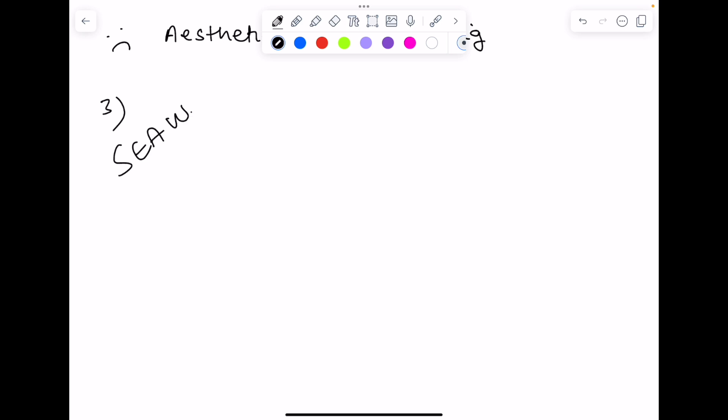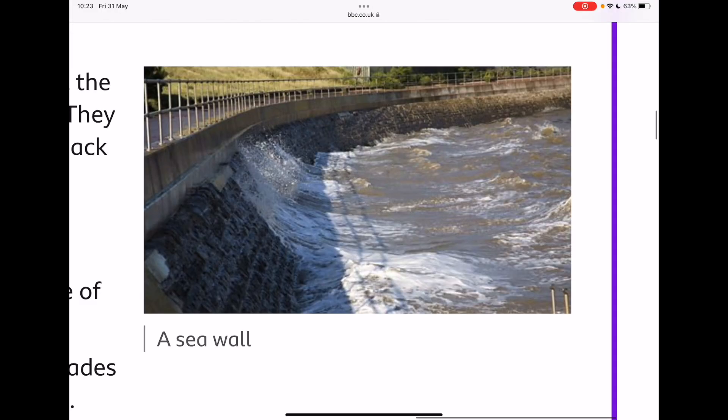Sea walls. So here's a sea wall. These are concrete barriers that limit the effect of coastal erosion, and they're very good for reducing damage to high-value land. They're hard-wearing, but they're usually the most expensive option, and obviously over time they can become eroded themselves, so they need maintenance.